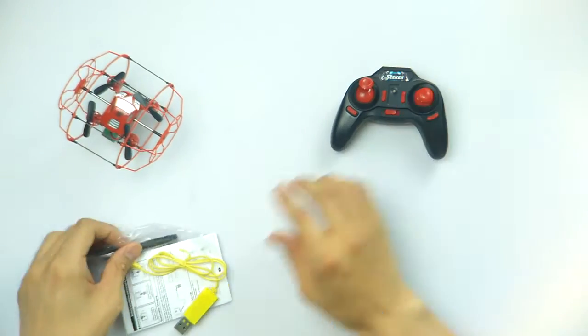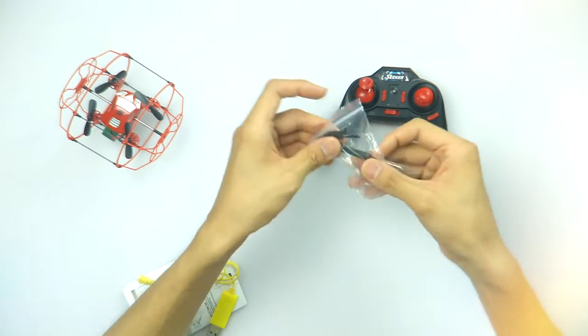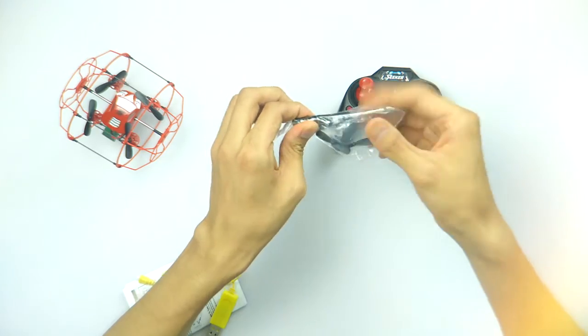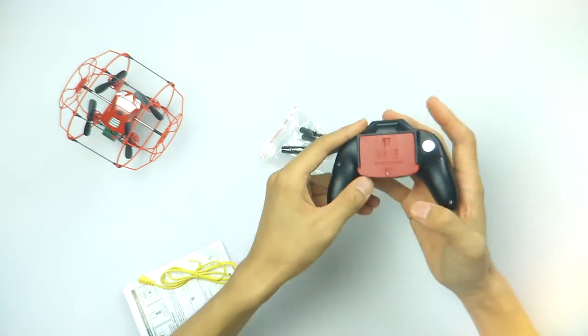We'll crash it now. See? So let's take a look first - what's inside the box. Remote control, and this is a screwdriver to open this.